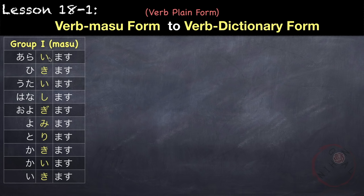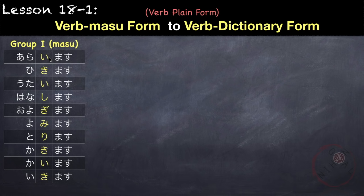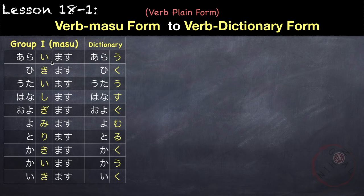For group 1, we simply change the syllable before masu, which are in the i-line, to the u-line. For example, araimasu — the i syllable will become u and we remove masu. So araimasu becomes arau.